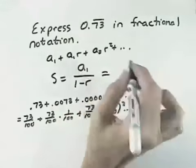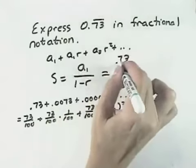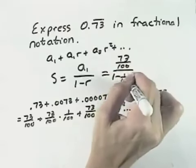So for our sum, if we take our first term, it's 73 over 100, and then 1 minus 1 over 100.